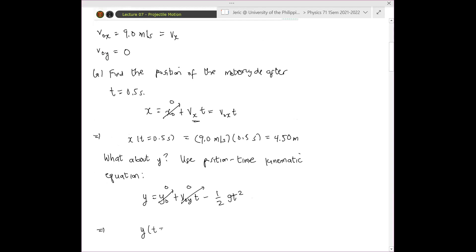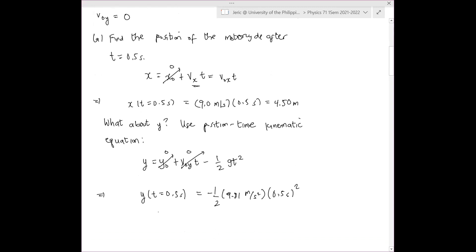Therefore, y at t equals 0.5 seconds is just minus one-half times 9.81 meters per second squared times 0.5 seconds quantity squared. And hence, this is just equal to negative 1.226 meters.